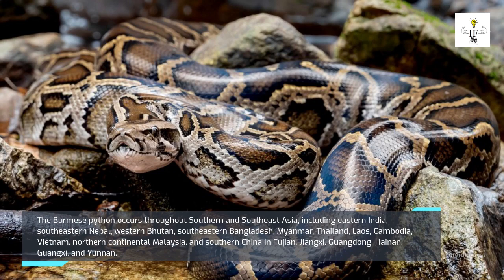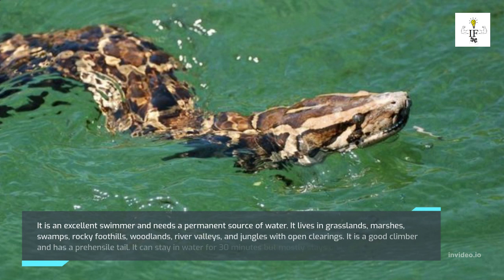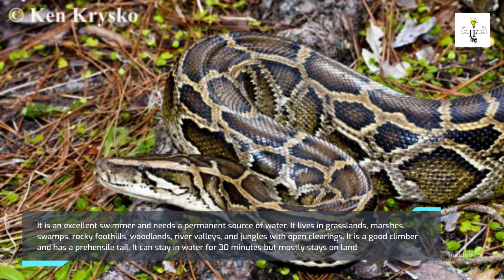The Burmese python occurs throughout southern and Southeast Asia, including eastern India, southeastern Nepal, western Bhutan, southeastern Bangladesh, Myanmar, Thailand, Laos, Cambodia, Vietnam, northern continental Malaysia, and southern China. It is an excellent swimmer and needs a permanent source of water. It lives in grasslands, marshes, swamps, rocky foothills, woodlands, river valleys, and jungles. It is a good climber with a prehensile tail and can stay in water for up to 30 minutes.